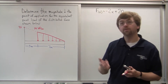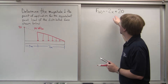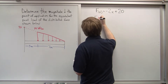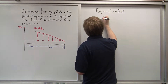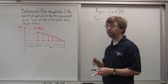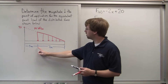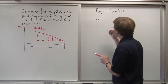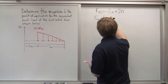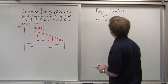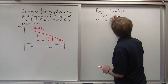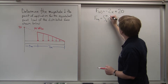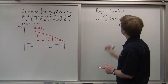Next, to find FEQ, we simply integrate this equation. We integrate from the minimum X value to the maximum X value — in this case, from 3 meters out to a total of 10 meters out. So we integrate from 3 to 10 of our force function, negative 2X plus 20, with respect to X.